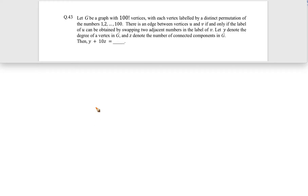Let's look into this question. They are talking about a graph G with 100 factorial vertices — a very big number we cannot deal with directly. We will deal with a smaller number to figure out how the pattern is working, and then we will see. Let's continue: each vertex is labeled by a distinct permutation of the numbers 1 to 100.